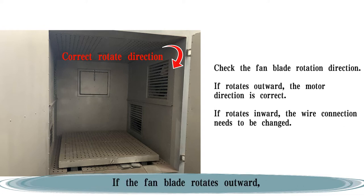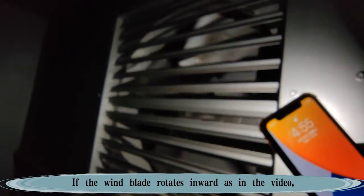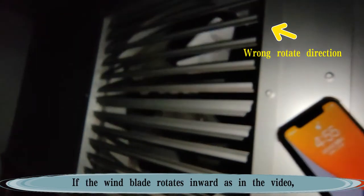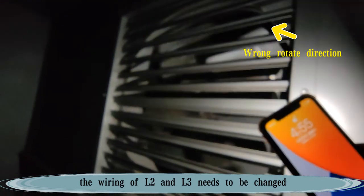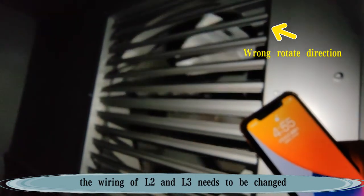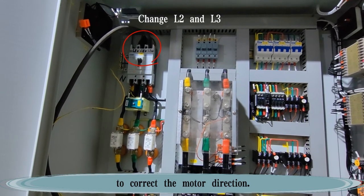If the fan blade rotates outward, the motor direction is correct. If the wind blade rotates inward as in the video, the wiring of L2 and L3 needs to be changed to correct the motor direction.